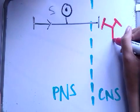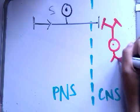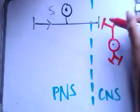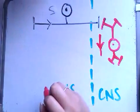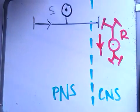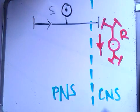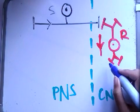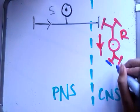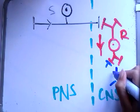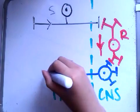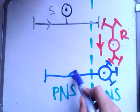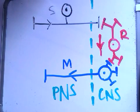This comes up in unit 4 because unit 5 is a synoptic module, so they can ask these questions. The direction of the impulse through the relay neuron is from the sensory to the motor. Motor neurons have their cell body within the central nervous system and carry an impulse from the central nervous system to the peripheral nervous system.